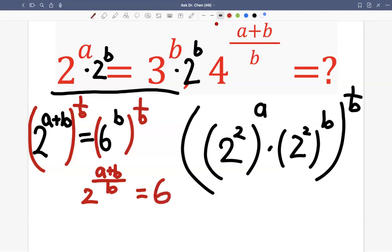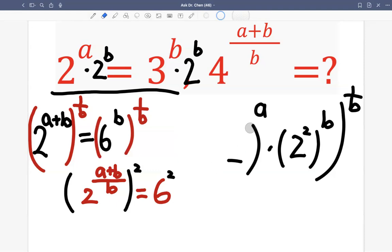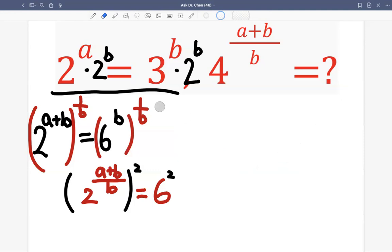But we need the base to be four. So we just raise this by square, and raise this by square. So two to the a plus b divided by b, and then raised by square. We can't apply this square to two.